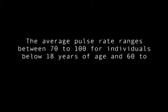Now let us come to the range of pulse rate, because pulse rate varies on the basis of certain factors. The average pulse rate ranges between 70 to 100 for individuals below 18 years of age, and for adults it ranges from 60 to 100. However, in normal conditions some athletes have a pulse rate below 40 beats per minute, and in newborns it is as high as above 140.